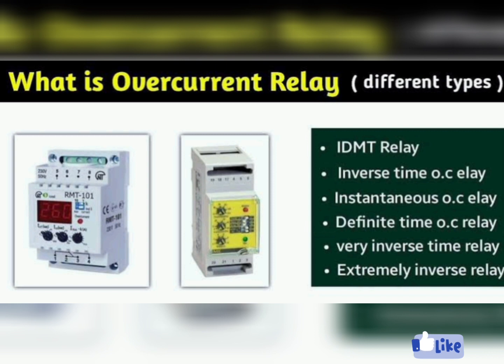There are several types of protection that can be used to protect transformers, including overcurrent protection. This type of protection responds to high current levels by opening the circuit and interrupting the flow of electricity. It is used to protect the transformer from damage caused by short circuits and ground faults.